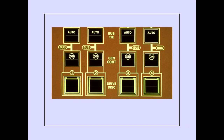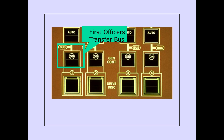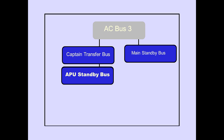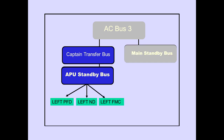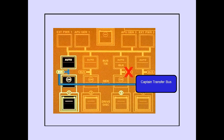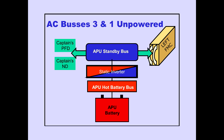If AC bus 2 is unpowered, the first officer's transfer bus is automatically transferred to AC bus 1 for backup power. The captain's transfer bus is automatically transferred to AC bus 1 for backup power. If AC buses 3 and 1 are unpowered, the captain's transfer bus is unpowered.